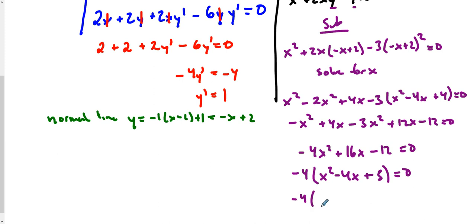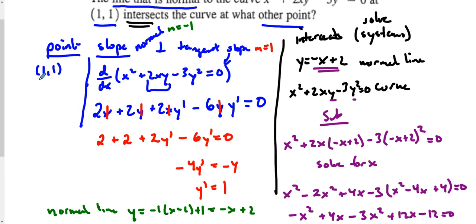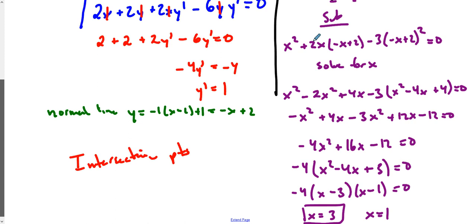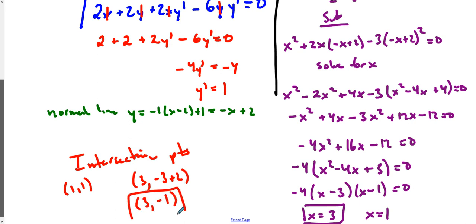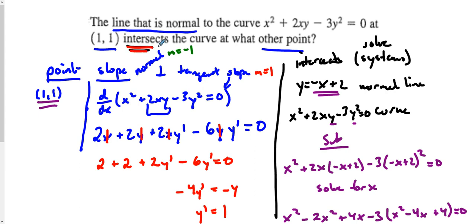We factor to get (x − 3)(x − 1) = 0, so our x values are x = 3 and x = 1. That should come as no surprise since we know one of our points is (1, 1). Our other intersection uses x = 3. Plugging into y = −x + 2: y = −3 + 2 = −1. So our other intersection point is (3, −1).